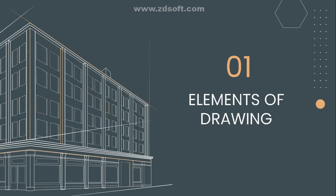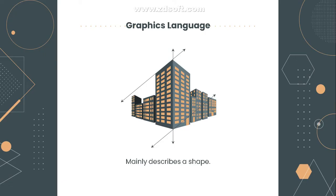There are actually two elements of drawing. The first one is what we know as the graphics language. The graphics language mainly describes a shape — all the drawings, all the objects drawn, all the projections are part of the graphics language. For example, the drawing of buildings — this is the graphics language.